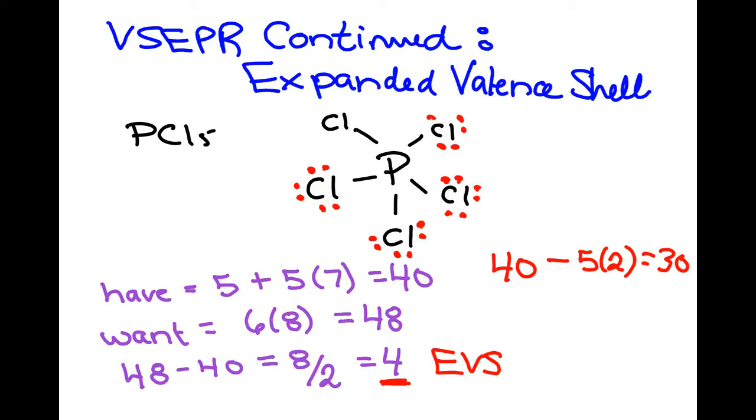Once we've placed all those electrons around the chlorines, we count them up, there's 30 of them. So there will be no lone pairs around the central atom.